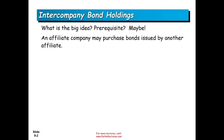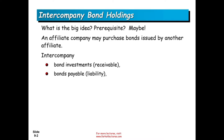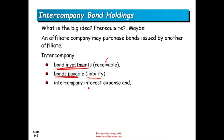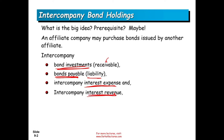An affiliate company may purchase bonds issued by another affiliate. Intercompany bond investments, which is a receivable, and bonds payable have to be canceled against each other. The issuing company has a loan, but the loan is held by the affiliate — so we have a liability and they have an asset, and they have to cancel each other out. The issuing company pays interest expense. The company that bought the bond will receive interest revenue. They're both intercompany — I am kind of paying myself — so all these must be eliminated.